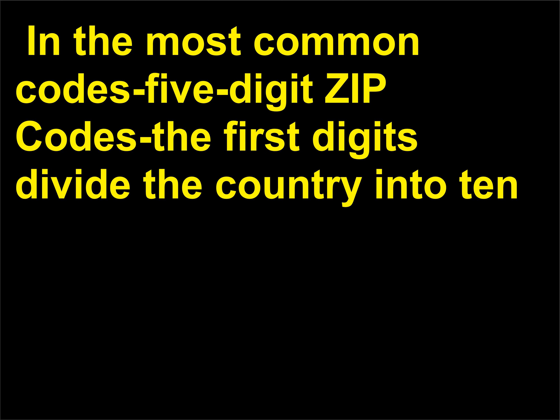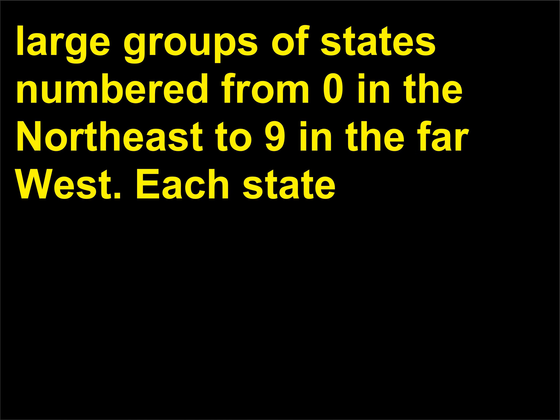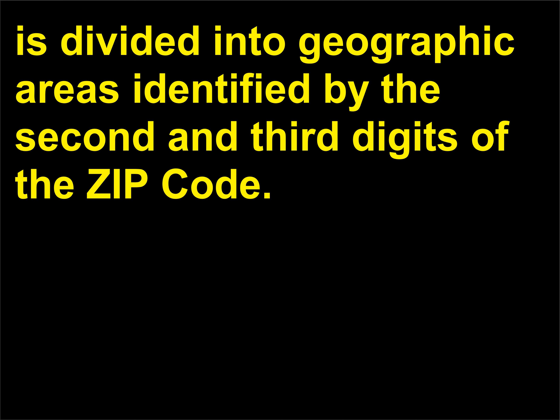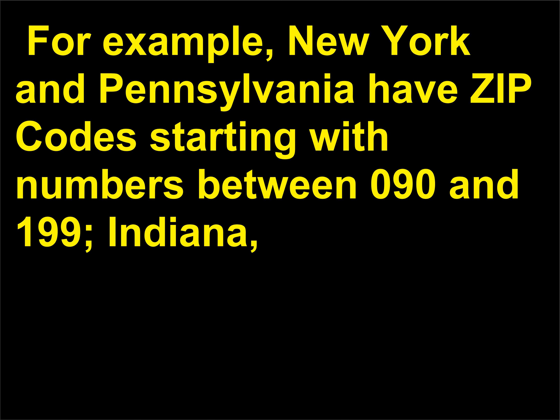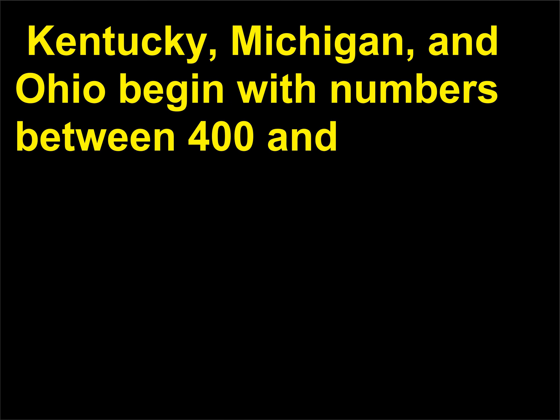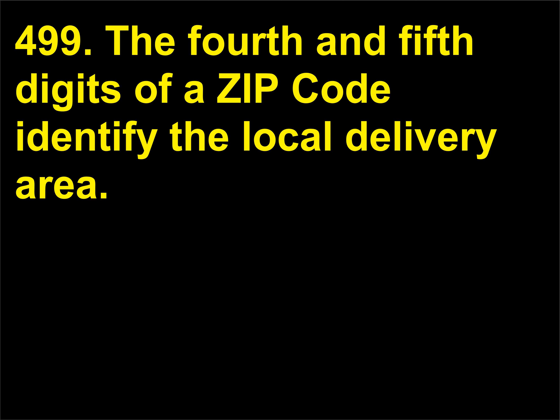In the most common 5-digit ZIP codes, the first digits divide the country into 10 large groups of states numbered from 0 in the northeast to 9 in the far west. Each state is divided into geographic areas identified by the second and third digits of the ZIP code. For example, New York and Pennsylvania have ZIP codes starting with numbers between 0–90 and 100–199; Indiana, Kentucky, Michigan, and Ohio begin with numbers between 400 and 499. The fourth and fifth digits of a ZIP code identify the local delivery area.